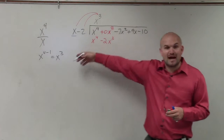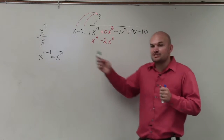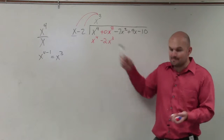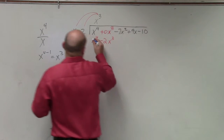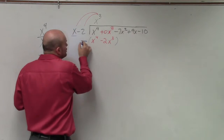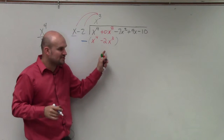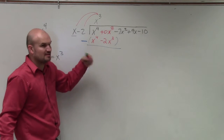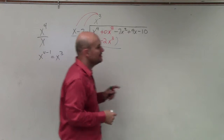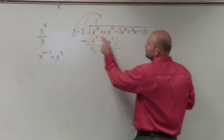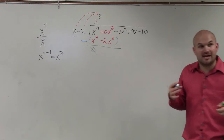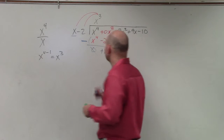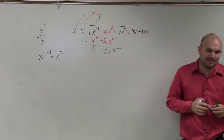Now we subtract the rows. Remember, you're not just subtracting numbers — you're subtracting a binomial, so you subtract both terms. x to the fourth minus x to the fourth is 0. Then it's 0x cubed minus a negative 2x cubed — minus a negative gives you a positive 2x cubed.